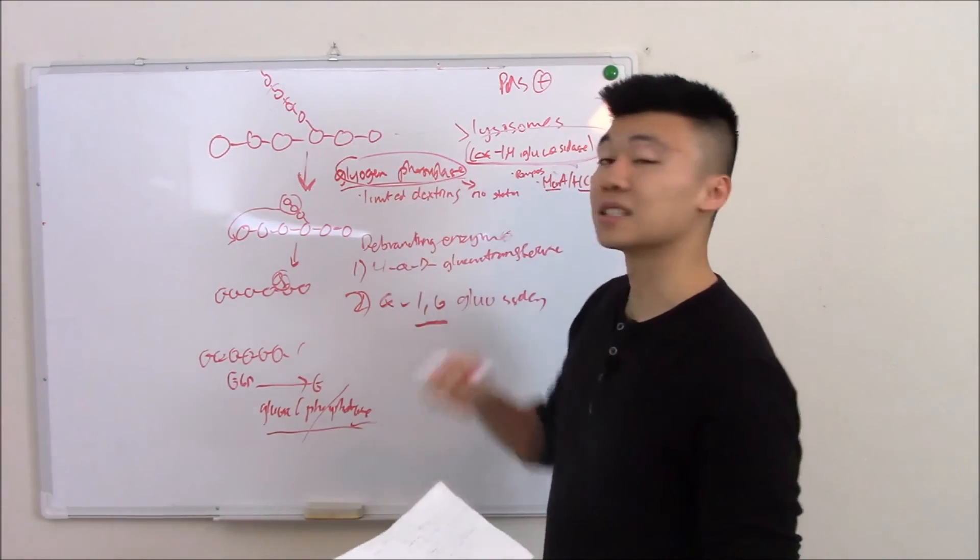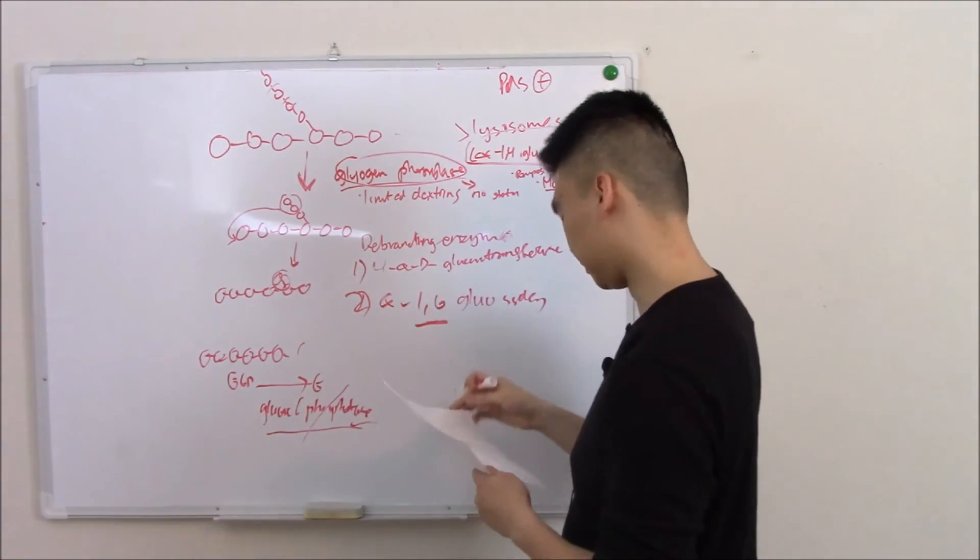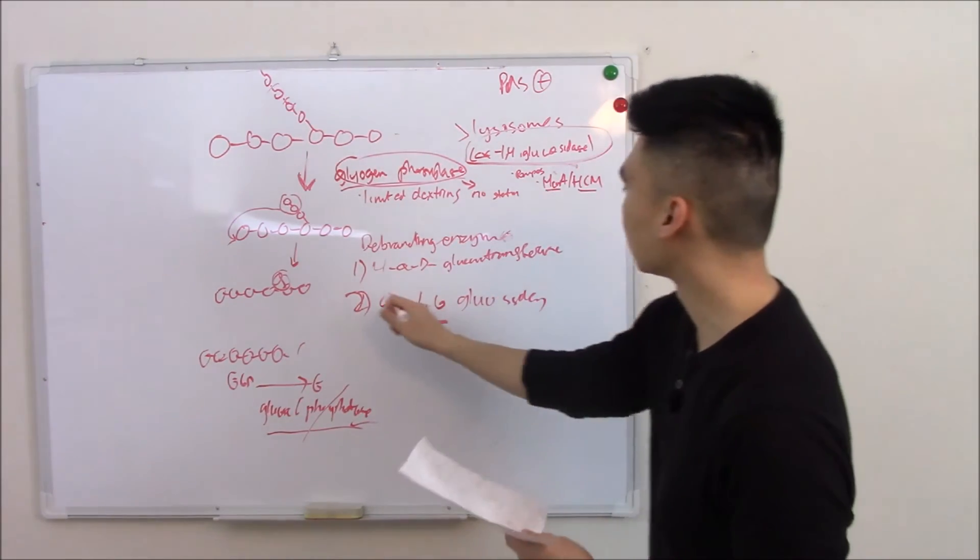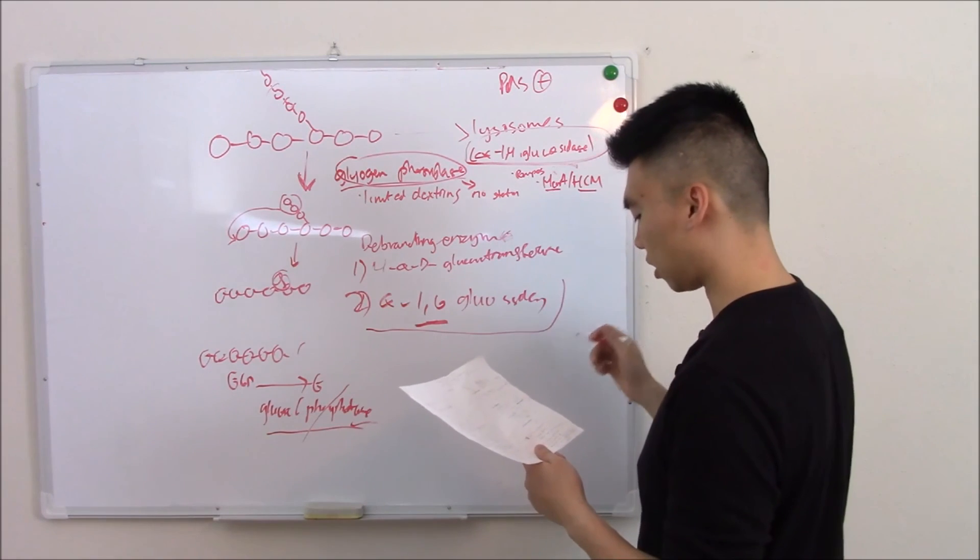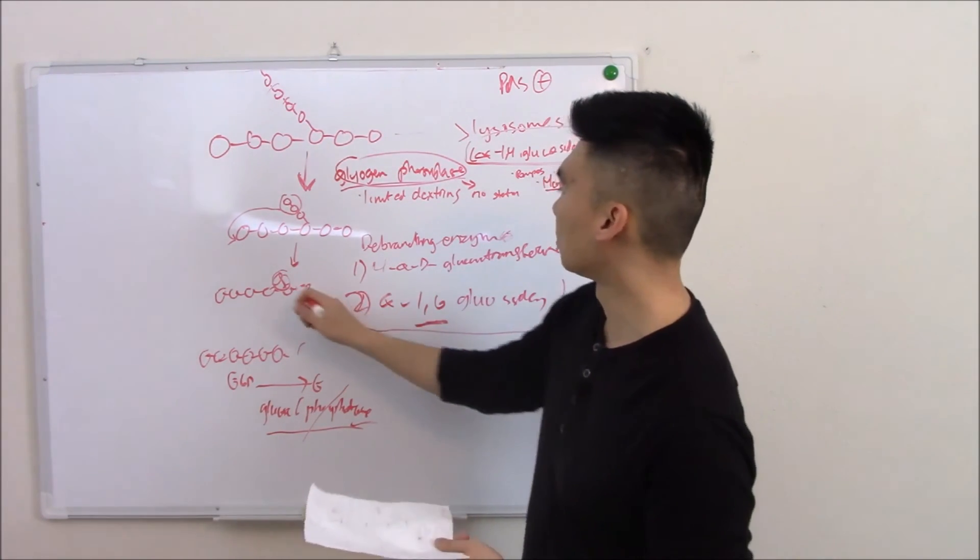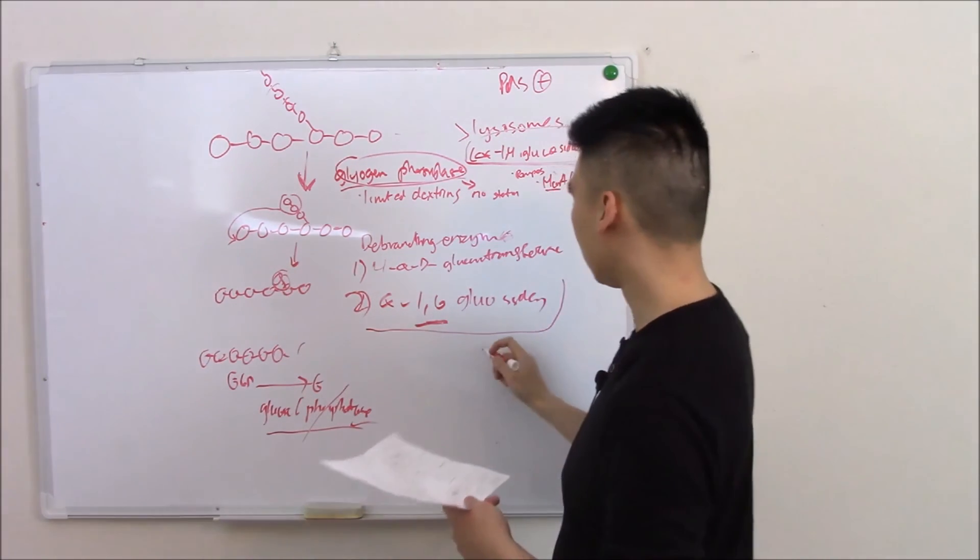That's a deficiency in glycogen phosphorylase. Lastly, Cori's disease - deficiency in alpha 1-6 glucosidase. This, remember, breaks that last bit off, so you get a buildup of limited dextrins. Usually pretty mild.